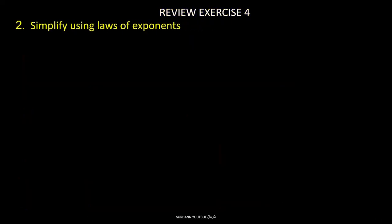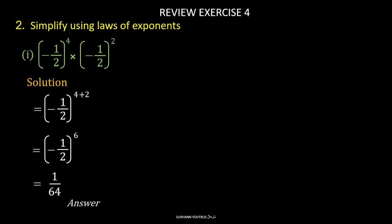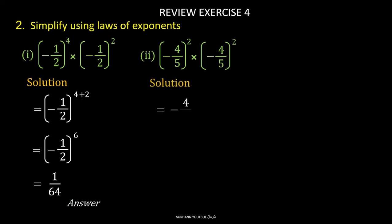Now review exercise 4, question number 2: Simplify using laws of exponent. Problem number 1: minus 1 upon 2 to the power 4, multiplied by minus 1 upon 2 to the power 2. Here the base of both values is minus 1 upon 2, which is the same. So according to the laws of exponent, we add their powers and simplify to get the answer 1 upon 64. Similarly, solve all other problems by yourself. We already learned the laws of exponent in our previous exercise videos, which you can watch on my YouTube channel.